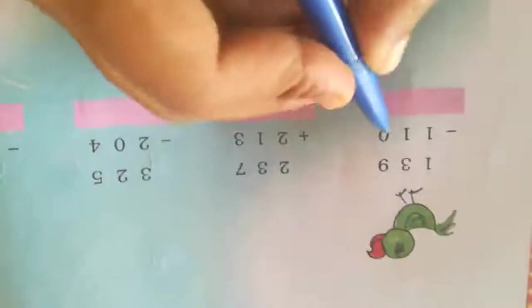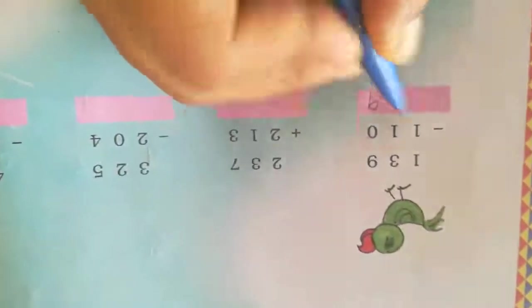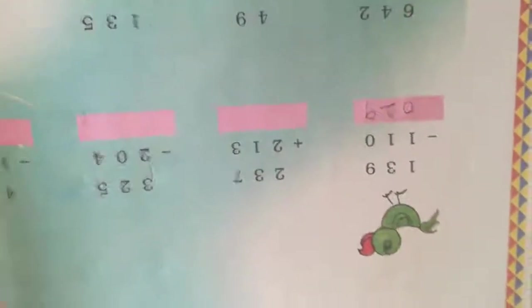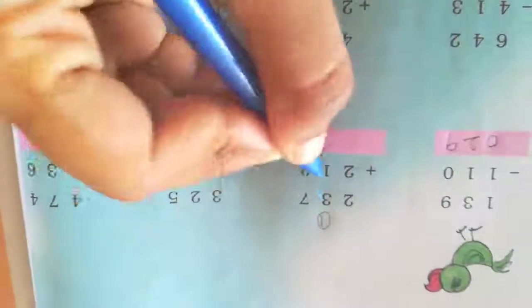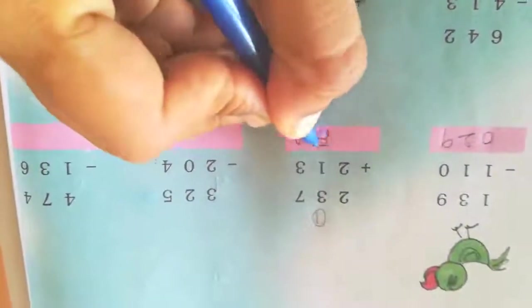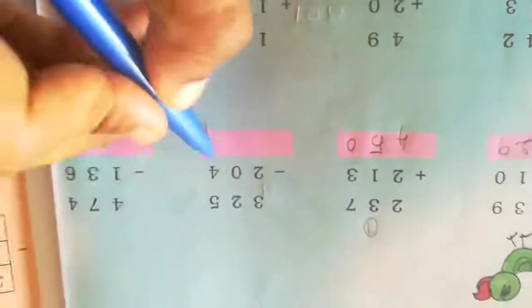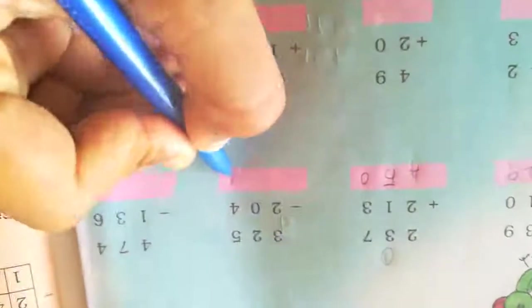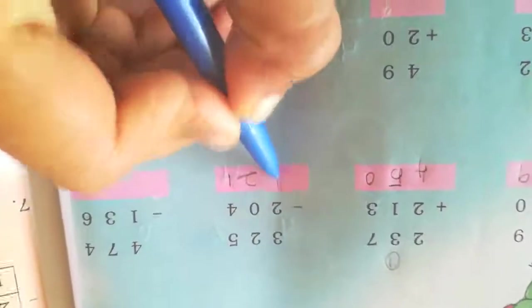Next, 7 minus 5 is 2. Next: 9 minus 0 is 9. 3 minus 1 is 2. 1 minus 1 is 0. Next, 7 plus 3 is 10, carry 1. 1 plus 3 is 4, plus 1 carry is 5. 2 plus 2 is 4. Next, 5 minus 4 is 1. 2 minus 0 is 2. 3 minus 2 is 1.